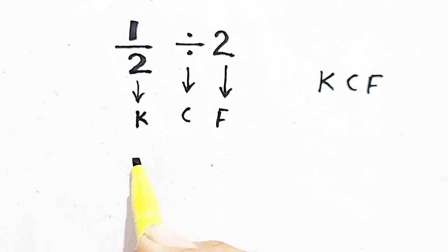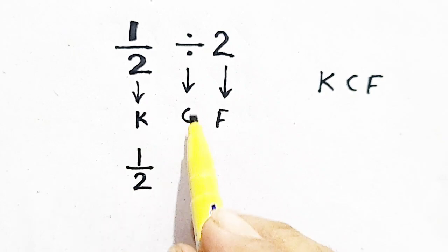1 by 2 is kept as it is. C means change - divide is changed into multiplication.